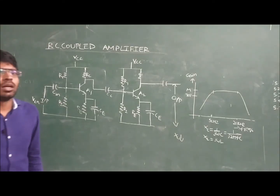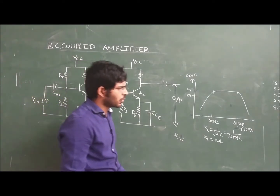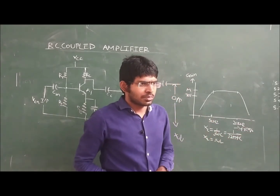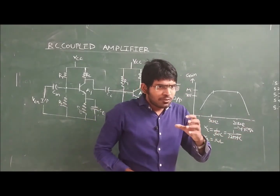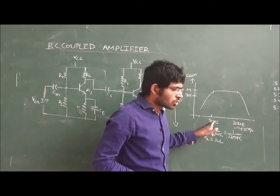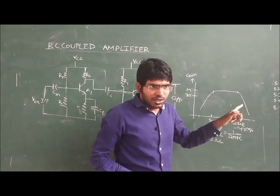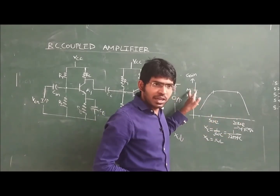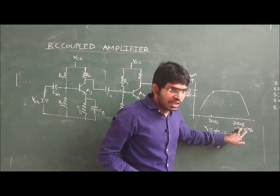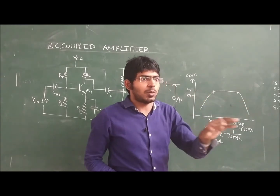We are discussing the frequency response of the RC-coupled amplifier. What is this frequency response? Response means it is an output. When we give different frequency signals as input, on the x-axis we are showing the different frequencies. For every different frequency signal, we are getting a different gain. The plot drawn between the frequency and the gain is called the frequency response.